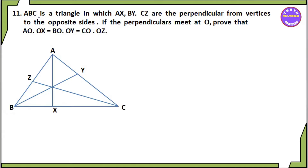ABC is a triangle in which AX, BY, CZ are perpendiculars from the vertices to the opposite sides.